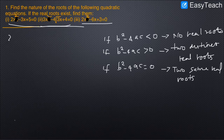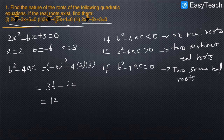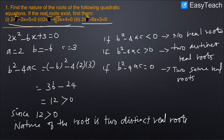The third problem is 2x²-6x+3=0. Here b²-4ac = 36-24 = 12, which is greater than 0. So the condition is two distinct real roots. Substituting the a, b, and c values into the quadratic formula will give two different distinct solutions.